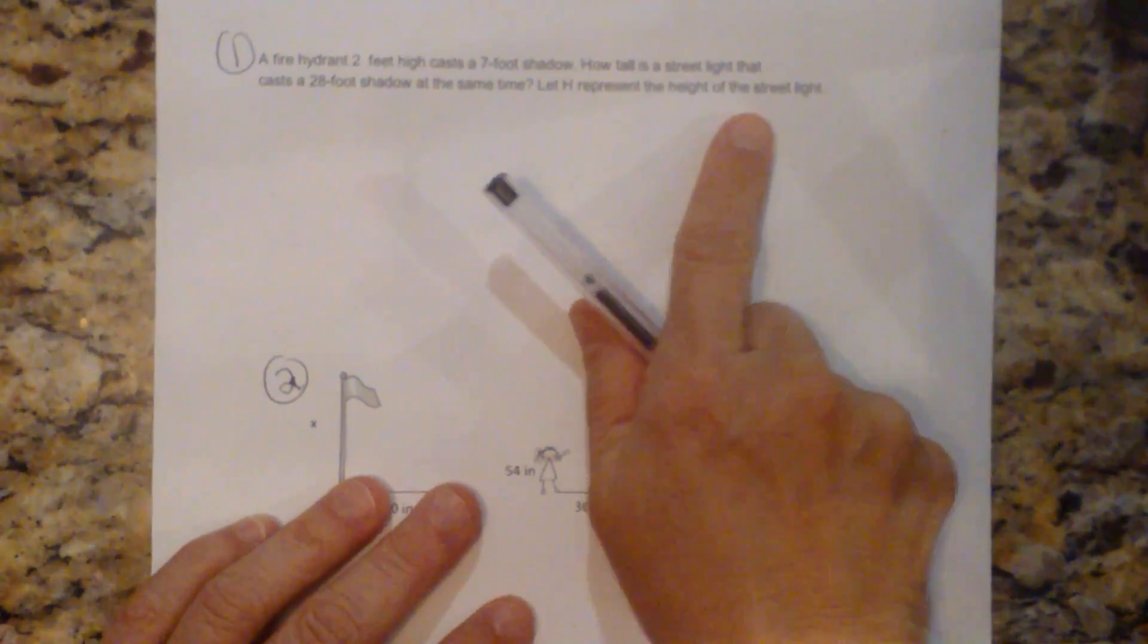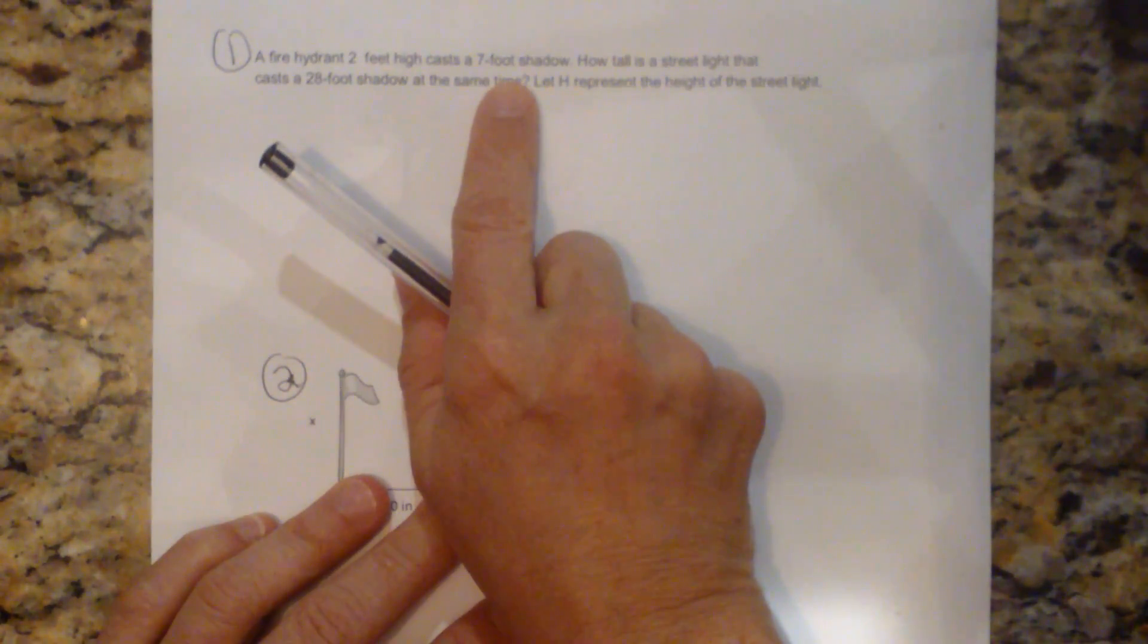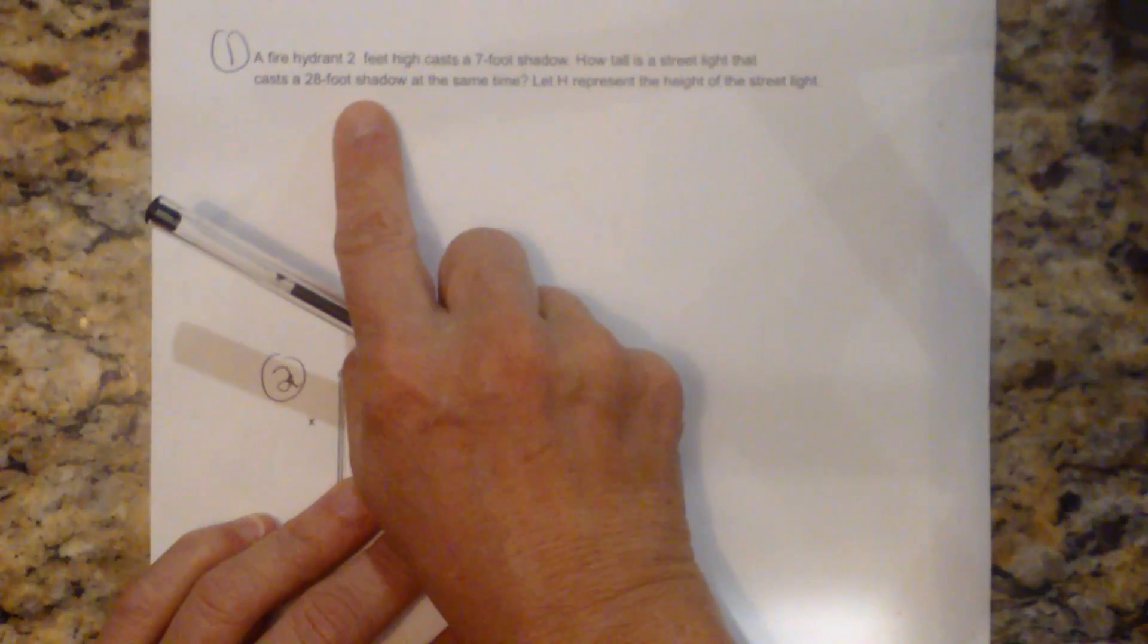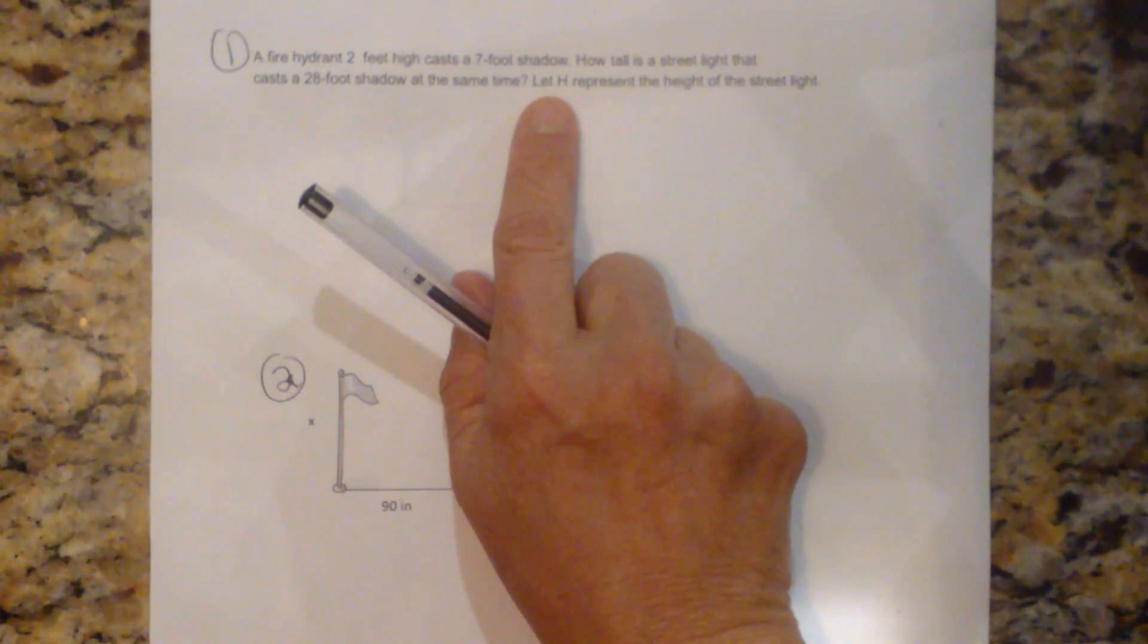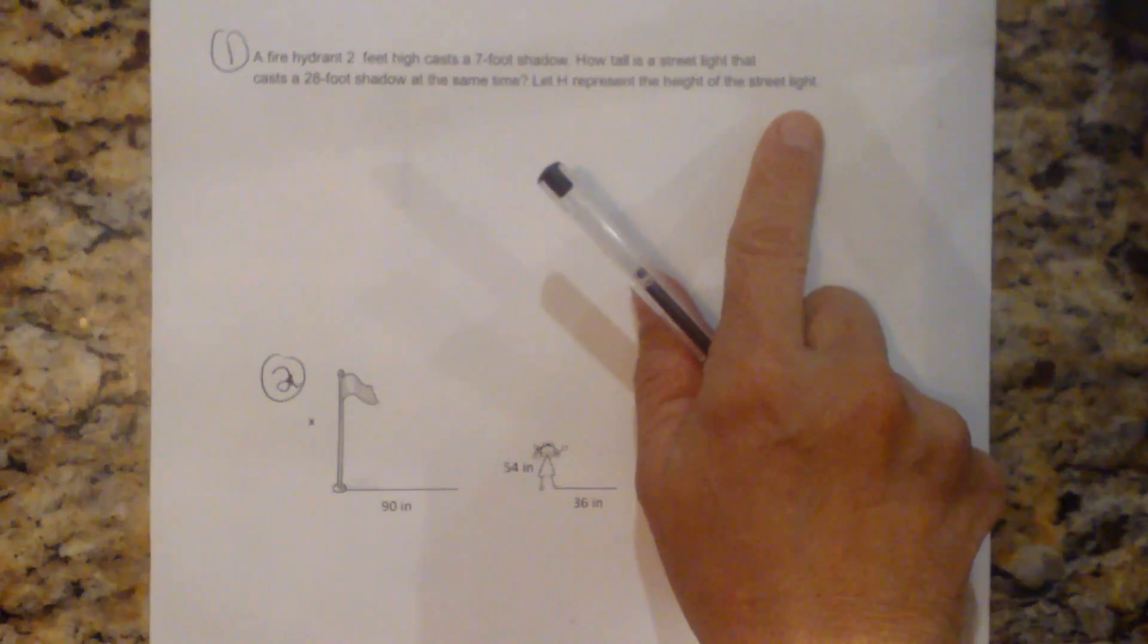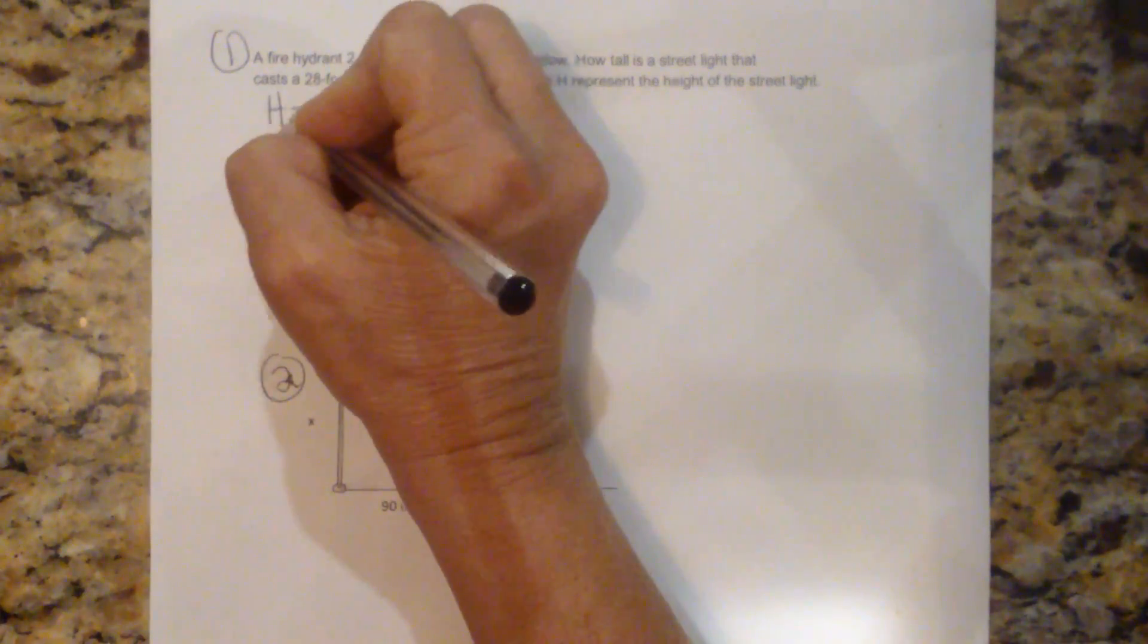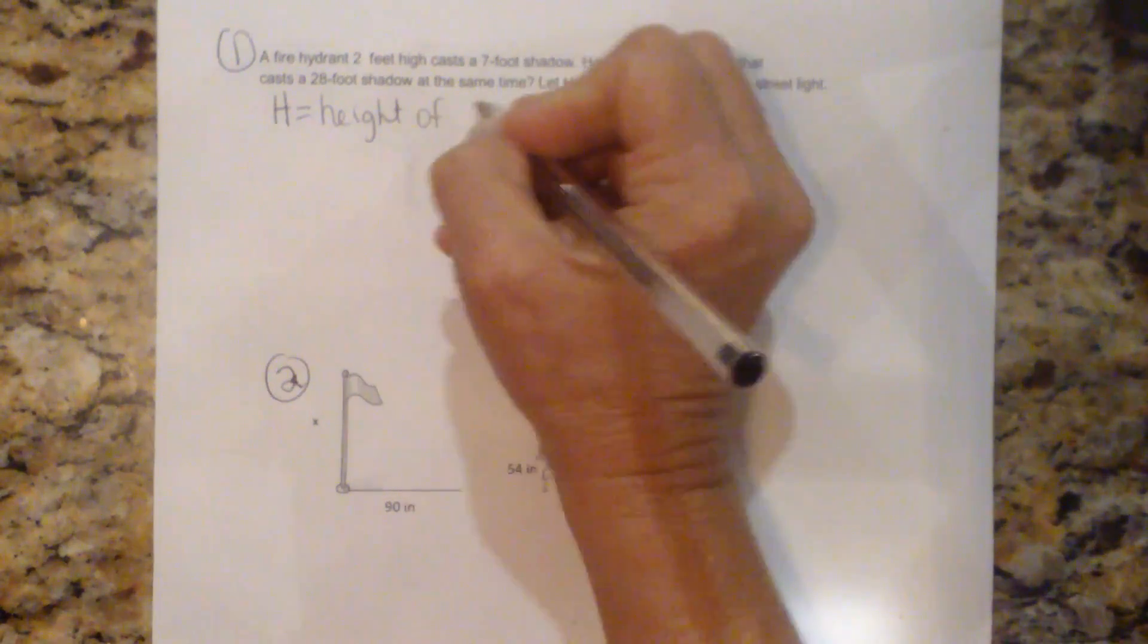So here's our first problem. A fire hydrant two feet high casts a seven foot shadow. How tall is a street light that casts a 28 foot shadow at the same time? Let h represent the height of the street light. So let's define our variable. h is equal to the height of the street light.